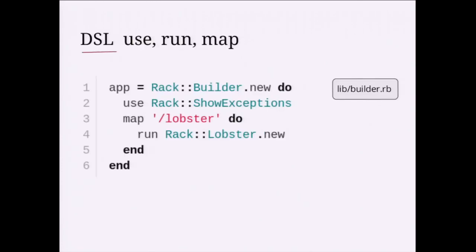To compose these applications together, Rack provides a mini DSL done with the help of a Rack::Builder class, which gives us `use`, `run`, and `map`. In a sample Rack application you say `Rack::Builder.new`, then `use` to add a specific middleware, and `map` to map a middleware to a specific path — for example, mapping Lobster onto the path `/lobster`. Let's see this in action with some code.